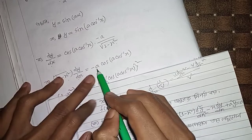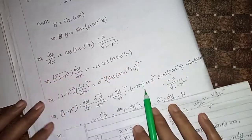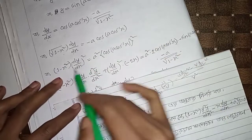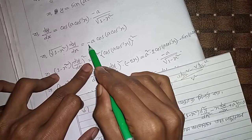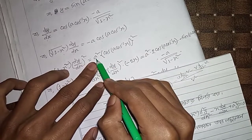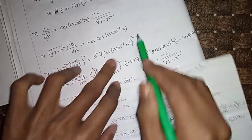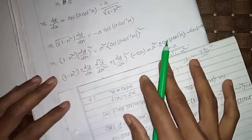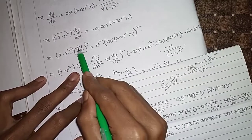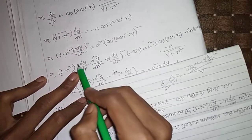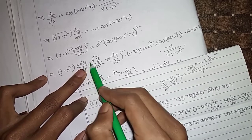dy/dx equals minus a·cos(a·cos⁻¹(x)) over root(1-x²), which becomes a²·cos²(a·cos⁻¹(x)). Now we'll find the second derivative by differentiating again.